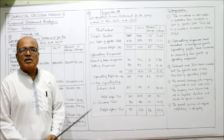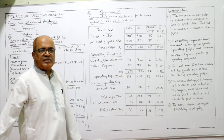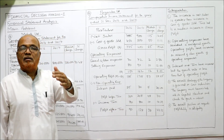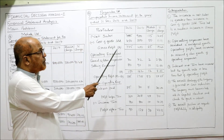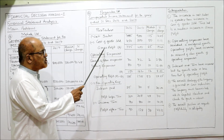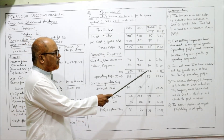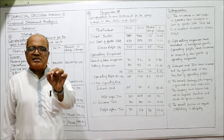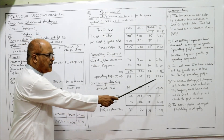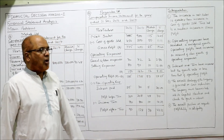Gross profit increased by 19.4% whereas operating profit increased by 28.65% — still higher. The reason: operating expenses are increasing at a slow rate of only 8%, which caused a big jump in operating profit of 28%. Next, interest and tax have increased but their growth rate is less than the operating profit growth rate of 28.65%: interest is increasing by 20% and tax by 14%.